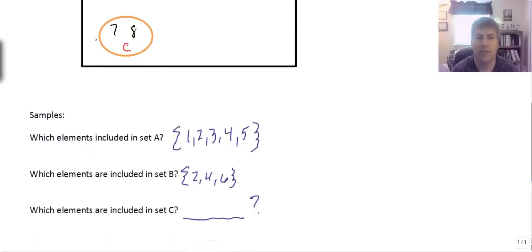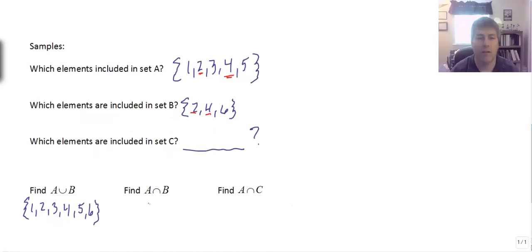And the numbers two and four are common to both. And we can see that in our answers from above. Four is in both and two is in both. Six is only in B and not in A. One, three, and five are only in A, not in B. But what's common to both or the intersection is just two and four.